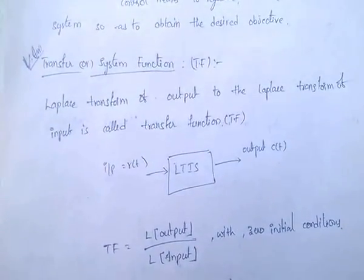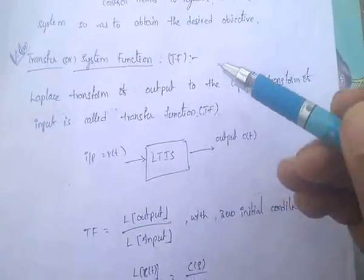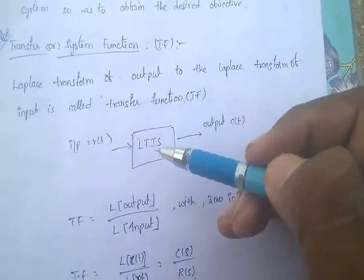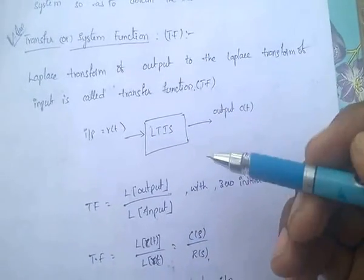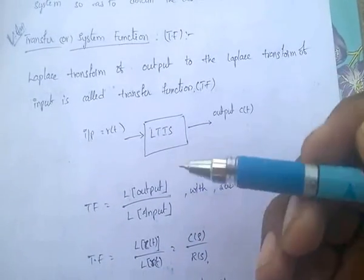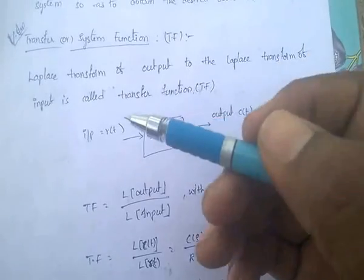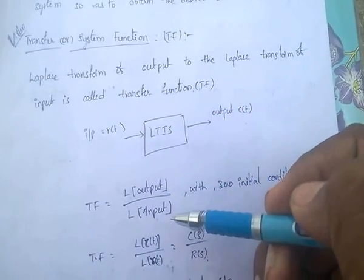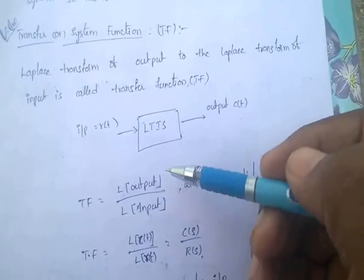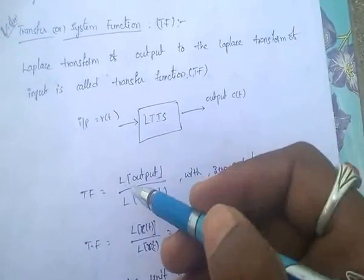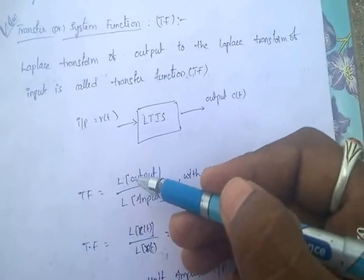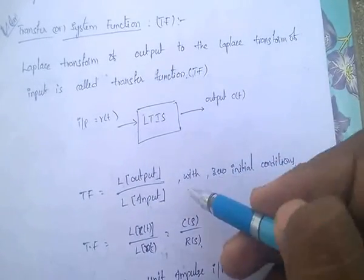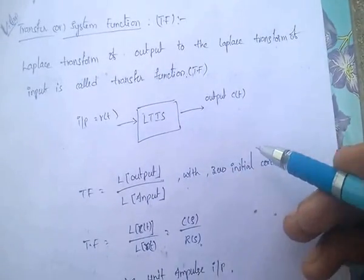Transfer function, or system function. Transfer function is nothing but the Laplace transform of output divided by the Laplace transform of input. It is called the transfer function — with zero initial conditions. That means the initial conditions are zero.